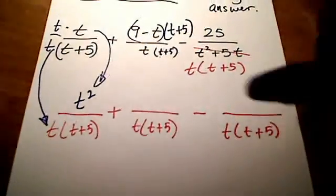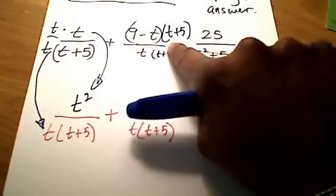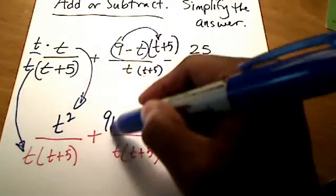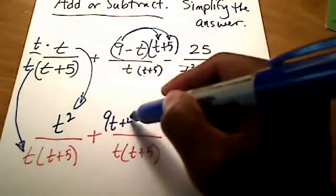Here's where things get a little bit tricky, because that is a foil problem up top. That's a foil problem. But no problem. You're probably your experts at foiling. 9 times t is 9t. 9 times 5, that's just a positive 45.